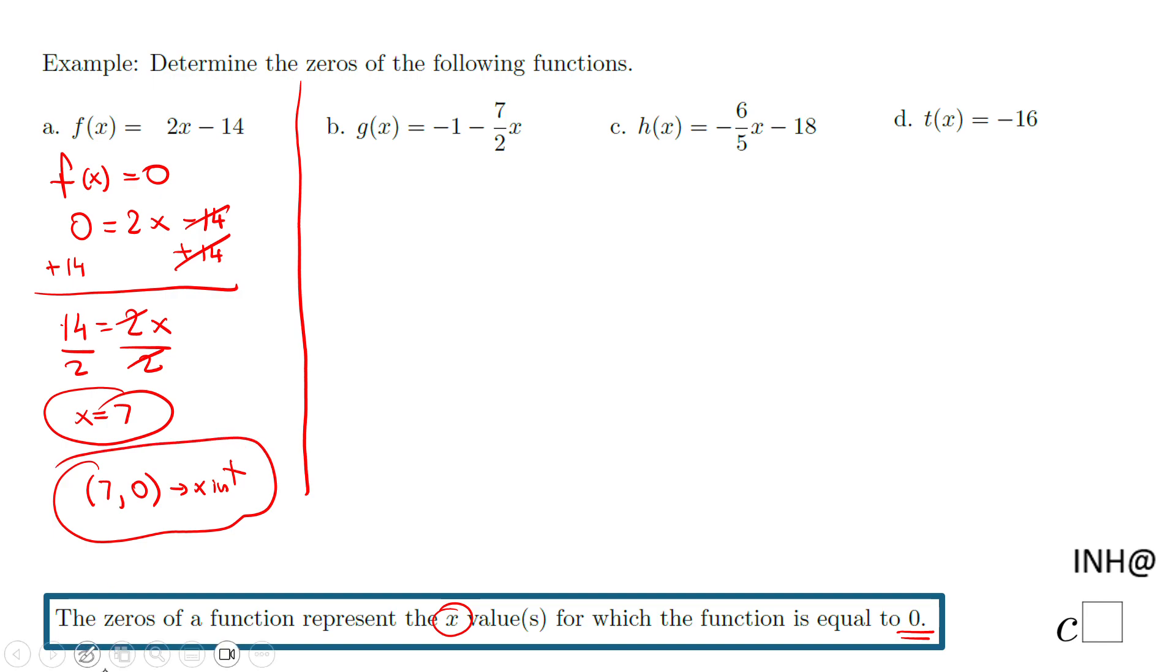So let's take a look to part b where we have another function g of x. Very similar. We're going to make that g of x equal to zero. And we have an equation zero equals negative 1 minus 7 over 2x.